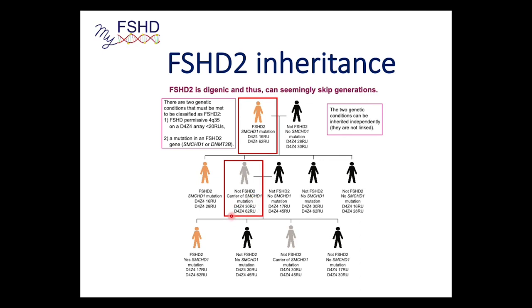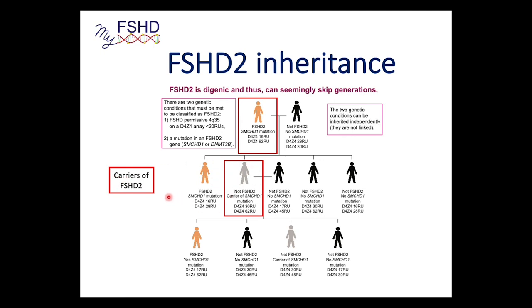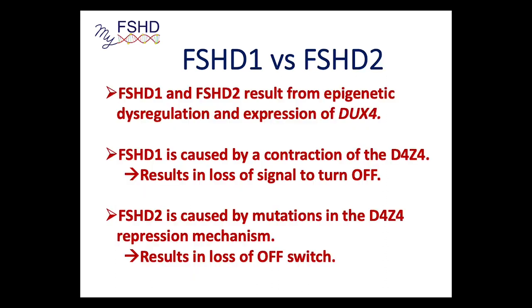A carrier has the SMCHD1 mutation for FSHD2 but because they didn't inherit the correct-size D4Z4 from either parent, they are an asymptomatic carrier. You can also have healthy children who don't have the SMCHD1 mutation at all, in which case it doesn't matter what size array they have. The difficult part is that this carrier, if their partner has a proper D4Z4 size repeat array — like a 17-repeat-unit 4qA chromosome — that could actually lead to FSHD2 in the next generation. This is why FSHD2 families can seem like FSHD is skipping a generation — genetically the mutation didn't skip, it's just because it's digenic.